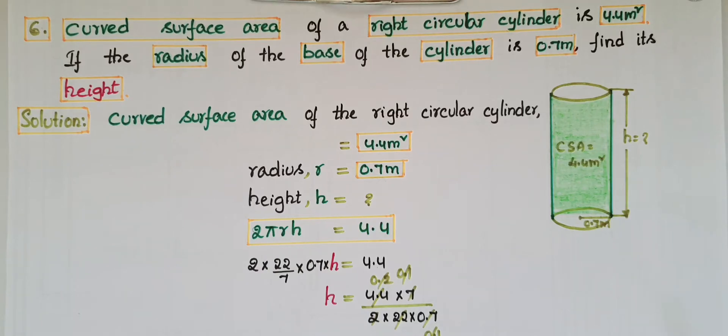This is sixth problem. Curved surface area of a right circular cylinder is 4.4 meter square. If the radius of the base of the cylinder is 0.7 meters, find its height.